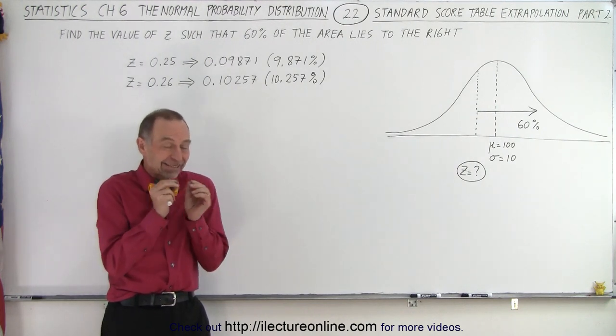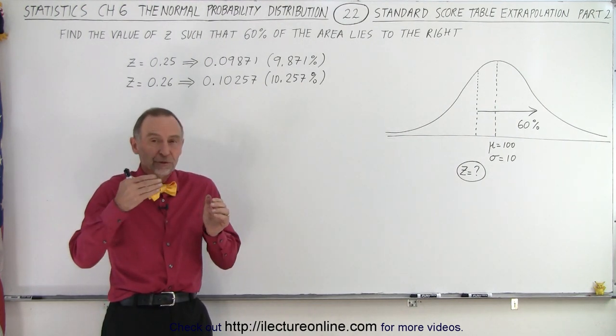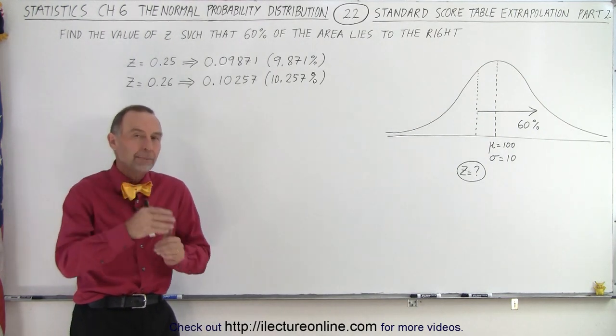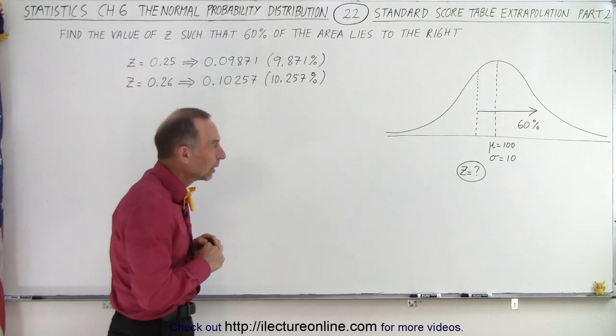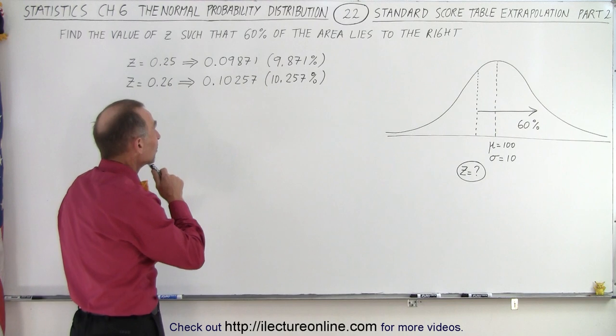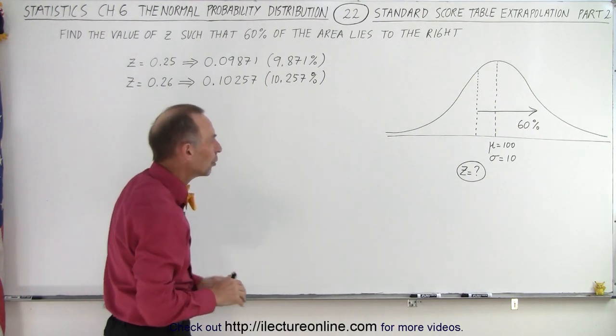And the z value may not exactly correspond with the percentage of the area that we're looking for, and so we may need to extrapolate for the z value as well. So here's an example: let's say that we're asked to find the z value such that 60% of the area lies to the right.